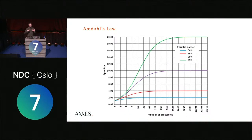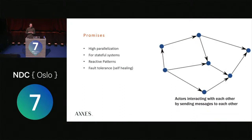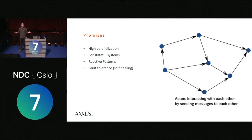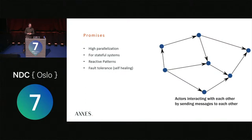That's where the actor model comes in. It promises an extremely high degree of parallelism for stateful systems. Parallelizing stateless things is easy — that's basically a web server serving files, put a load balancer in front and scale to infinity. But as soon as you're dealing with state, it becomes hard. That's where the reactive patterns that make up the actor model come in.